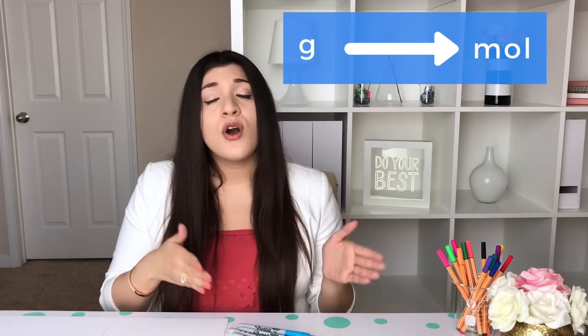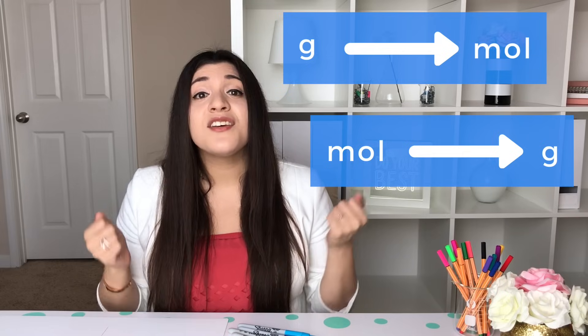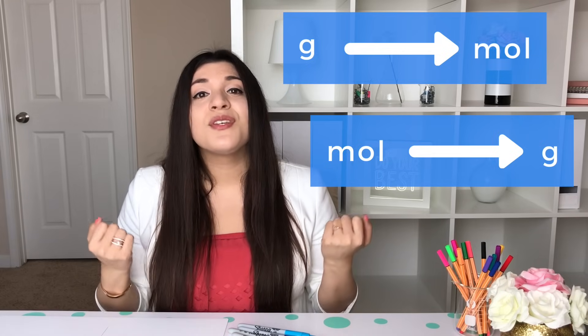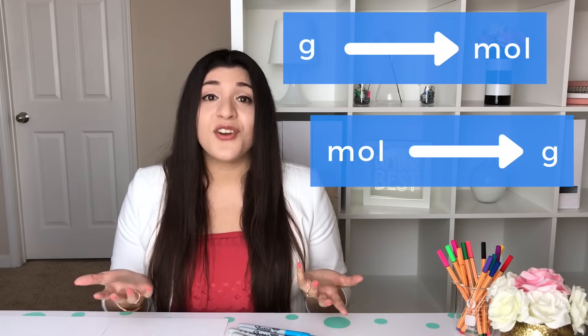Now that we've gotten molar mass figured out, remember conversion factors? So a conversion factor is a number that has two different units. Molar mass has grams per mole, so we know that that's going to be used as a conversion factor. Whenever you're going from grams to moles, or moles to grams, that is your clue to use the molar mass as a conversion factor.